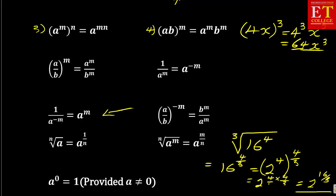The most simple law to remember is that any number to the power of 0 — such as a to the power of 0 — is equal to 1, provided that a is not equal to 0. For example, 100 to the power of 0 is equal to 1. These are the laws of exponents you should be well aware of. They can make your life easy and you can work much faster if these laws are used in the context of what you're given. They are usually provided at the back of your question paper in the final exam.